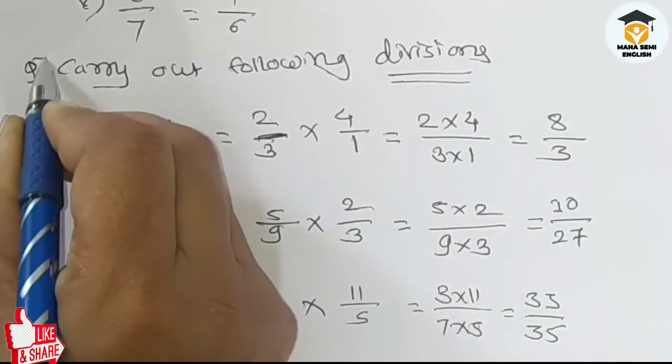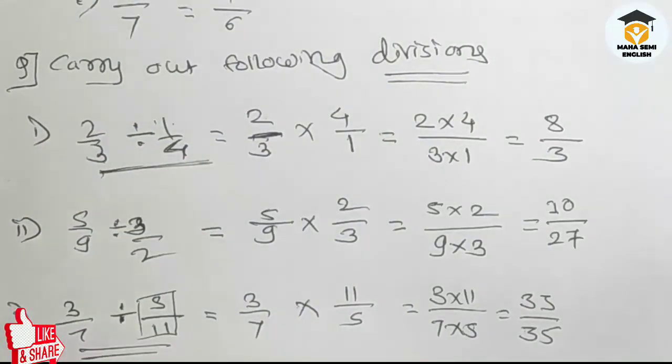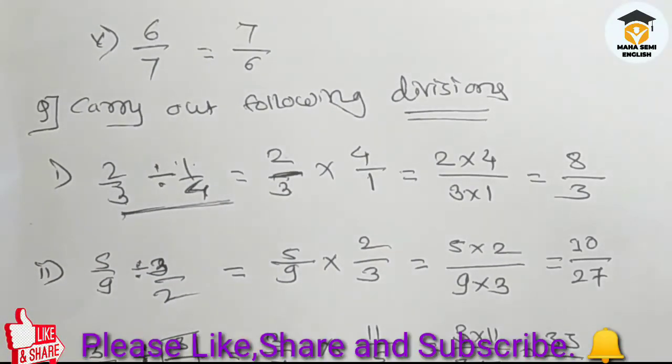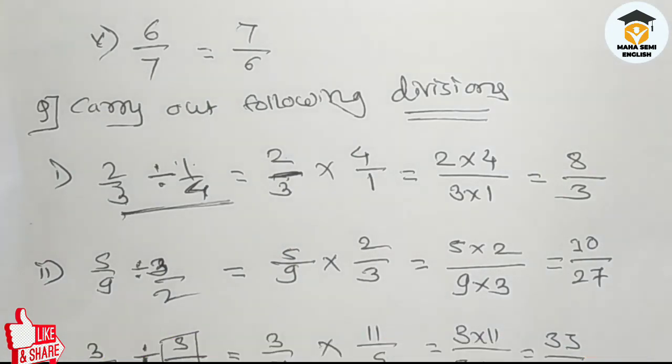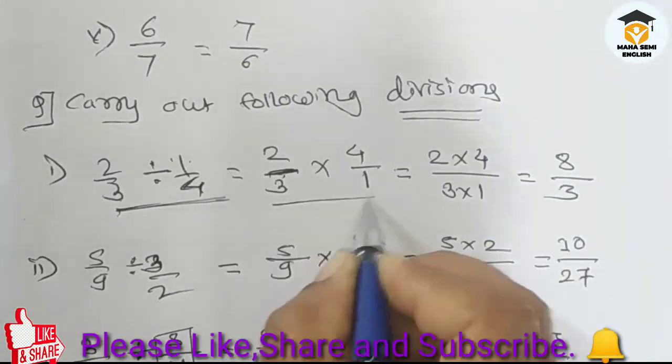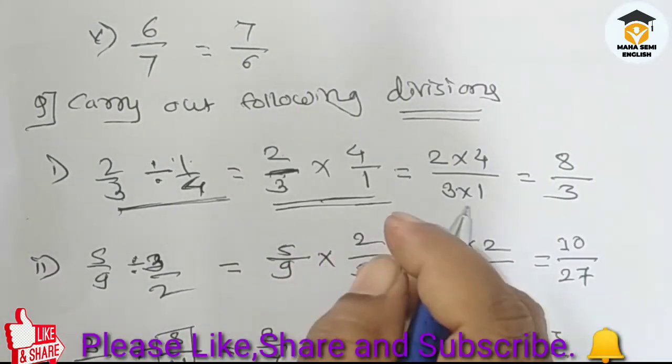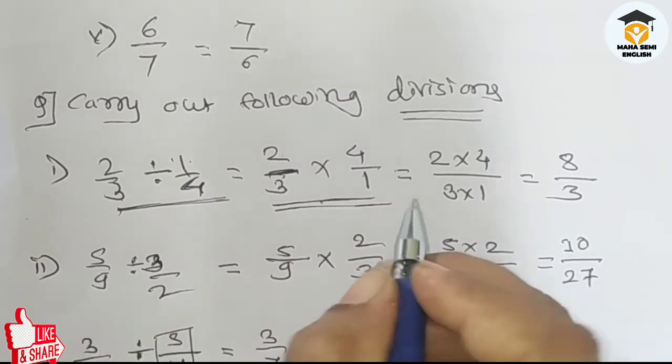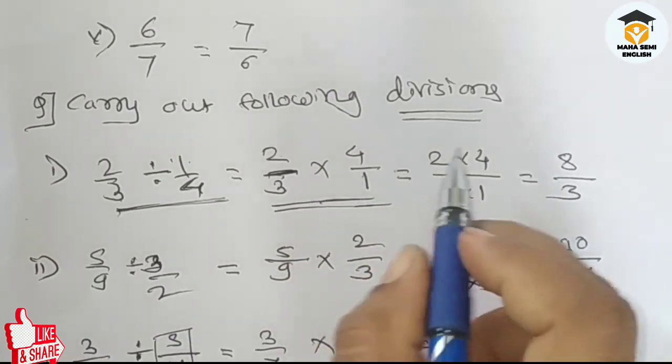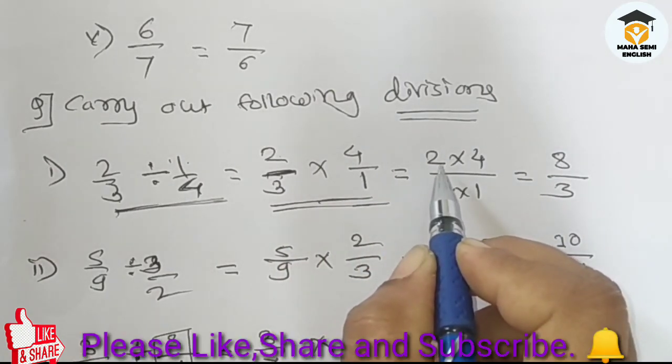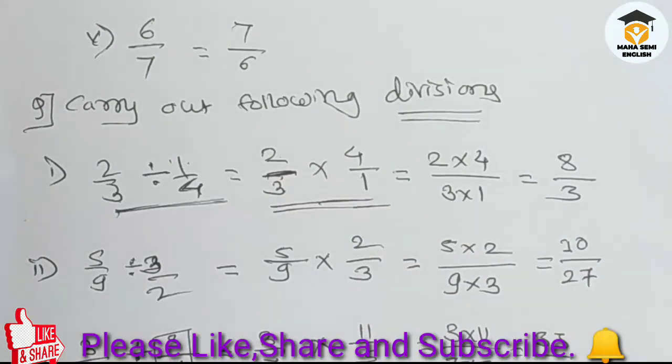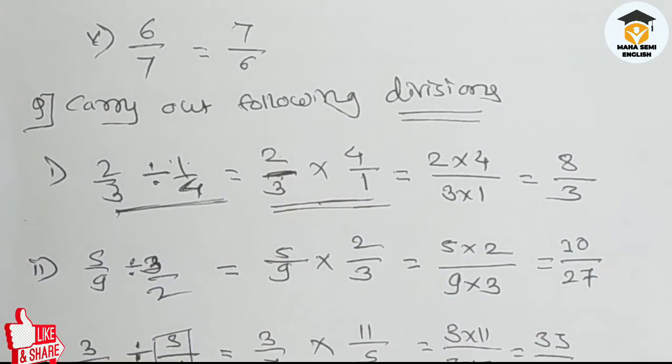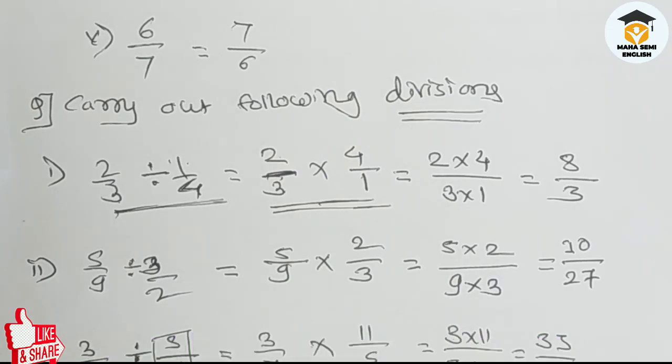When we do division, first you convert the second term into reciprocal form. When the reciprocal form is done, you do the multiplication. Multiplication is done by numerator multiply by numerator and denominator multiply by denominator, and we get the answer.